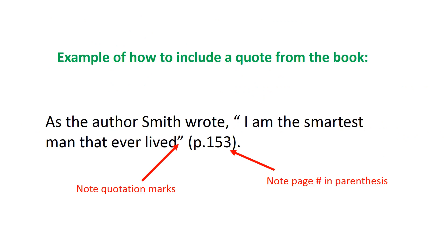Because this isn't a research paper, you won't need footnotes, endnotes, or any citations in the text itself. If, however, you do use a quote from the book, you want to have it in quotation marks, and at the end you can just put the page number — after the quotation is over but before the period — as shown in this slide.